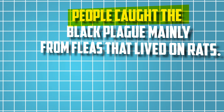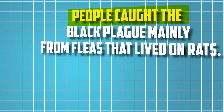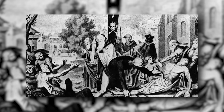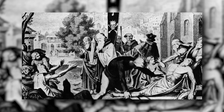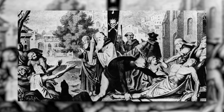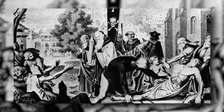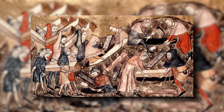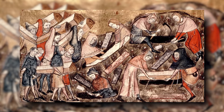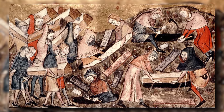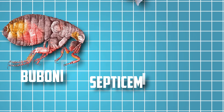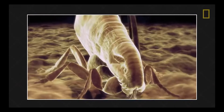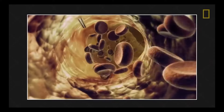People caught the Black Plague mainly from fleas that lived on rats. When infected fleas bite humans, they transferred the harmful bacteria into the person's bloodstream. This made many people very sick. The plague had three types – bubonic, septicemic, and pneumonic. Each type had its own set of symptoms.